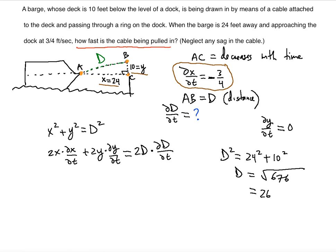Guess what, we can easily find this now, what the question asks us to do, based on all other variables that we know. So let's plug it in. 2 times 24, that's the x value, dx/dt is negative 3/4, plus 2 times 10 times dy/dt. dy/dt is 0, so it cancels everything out in that second term. Times 2, 26, that's the d we just found, times, I'm going to indicate this with another color, dD/dt. That's what we need to find.